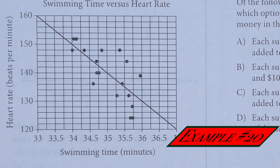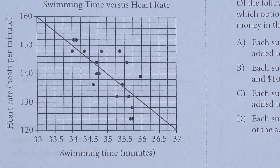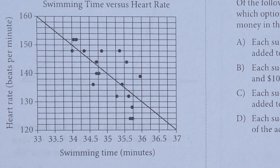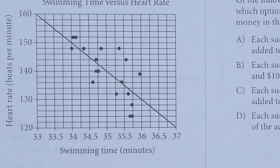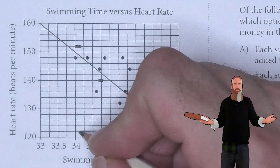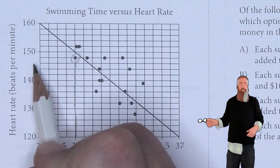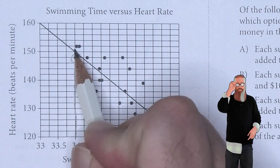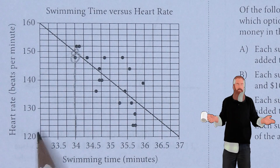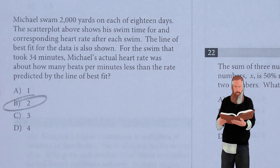Michael swam 2,000 yards on each of the 18 days of the scatterplot above, showing his swim time for each corresponding heart rate after each swim. The line of best fit for the data is also shown. For the swim that took 34 minutes, Michael's actual heart rate was about how many beats per minute less than the rate predicted by the line of best fit? If we take a look at 34 and come all the way up, his actual was coming in about 2 underneath the line, since these are increments of 2 on the left side. So the answer is 2, choice B.